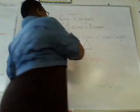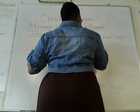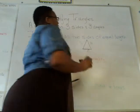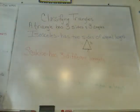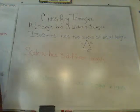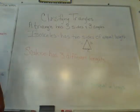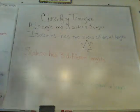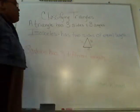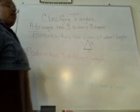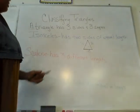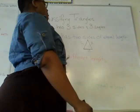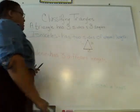Which two sides do you think are the same length? Let me label these. A and B. Good job. So, A and B are equal — this is an example of an isosceles triangle.